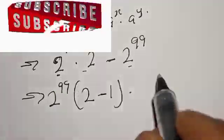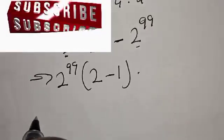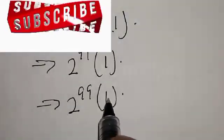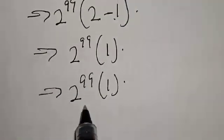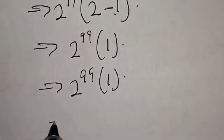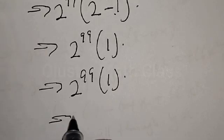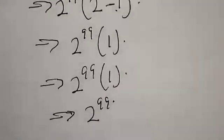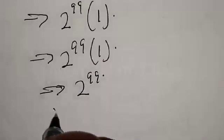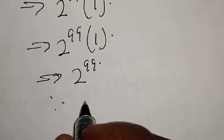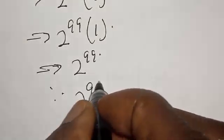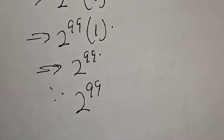If you open the bracket, you get back what we started with. So this implies 2 raised to power 99 multiplied by 1, which equals 2 raised to power 99. Therefore our final answer is 2 raised to power 99.